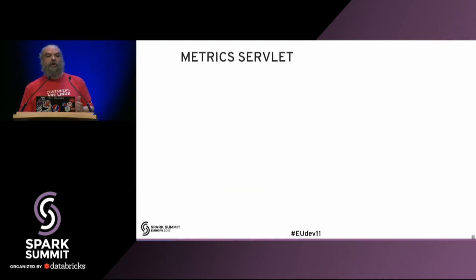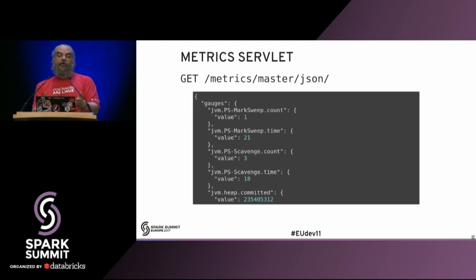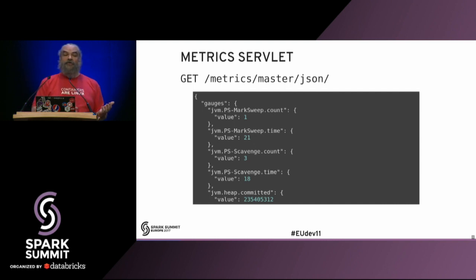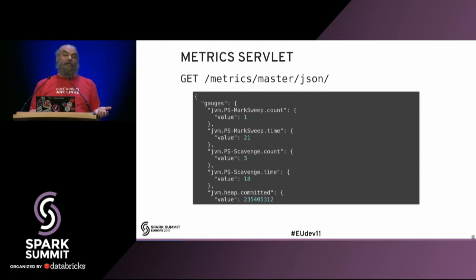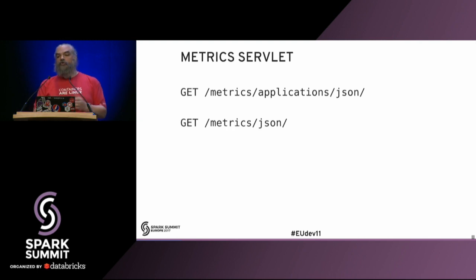The first sink we'll look at is called the metric servlet, and this is turned on by default - you don't have to do anything. You could make a RESTful GET request to this URL - we're looking at a master URL. What you get back is a dump of metrics. You see JVM mark-sweep count, mark-sweep time, scavenge count, scavenge time. Mark-sweep is a garbage collector that comes up very frequently in the metrics. There are also other URLs: metrics/applications/json to see what applications are running, and on any worker or driver you could get a specific dump for that process.